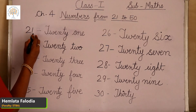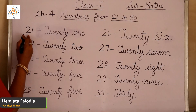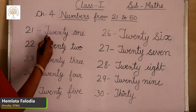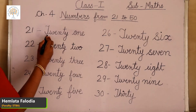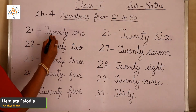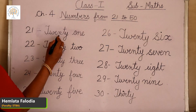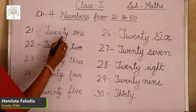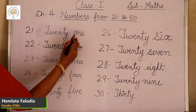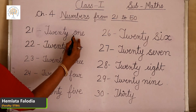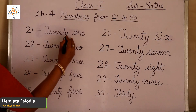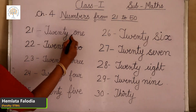21. 20 plus 1 is 21. Number name: T-W-E-N-T-Y, 20, and O-N-E, 1. This is 21.